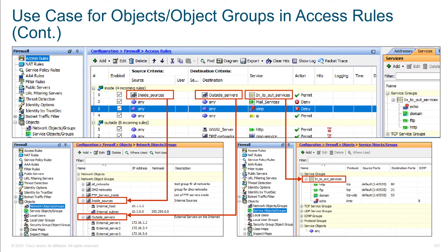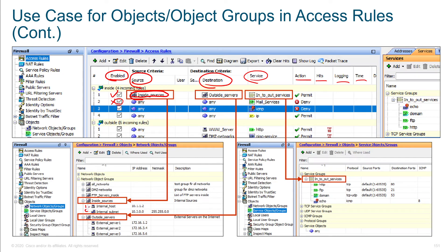Here's an example using the legacy interface, which is ASDM. What you're seeing here are access control lists, and your access control lists have a source, a destination, and a protocol. We've got actions, hit counts, and whether logging is enabled or if you want to make it time-based. You can enable or disable individual entries by deselecting a checkbox — this is fantastic for testing. When we say 'inside sources,' this is an object group that has two hosts: the internal host and an internal subnet. At any point in the future, you can select 'inside sources' and add additional components to it.